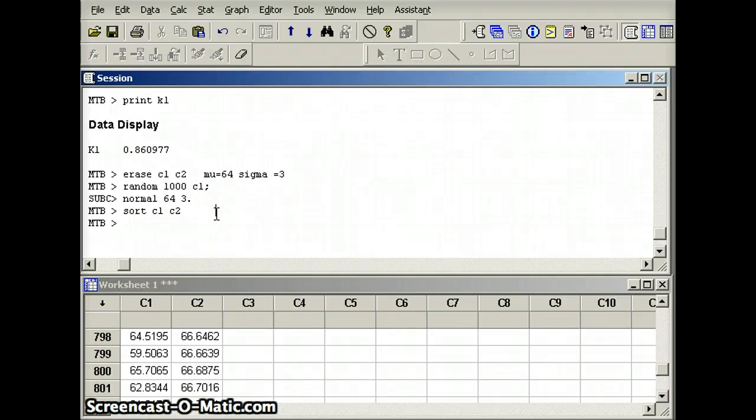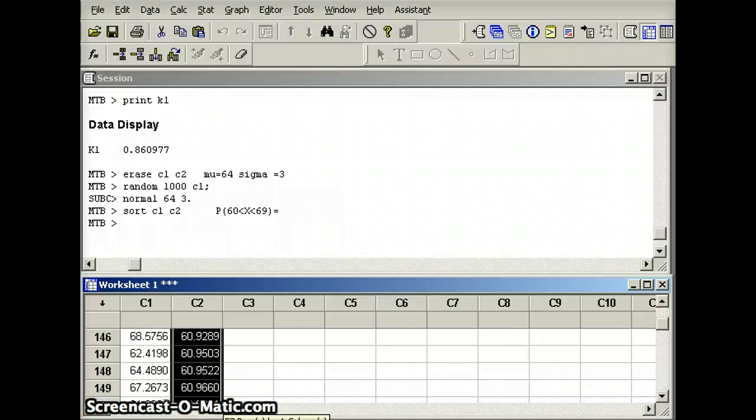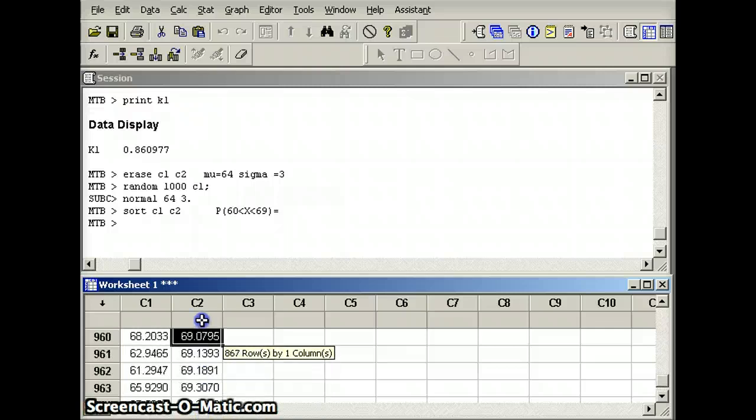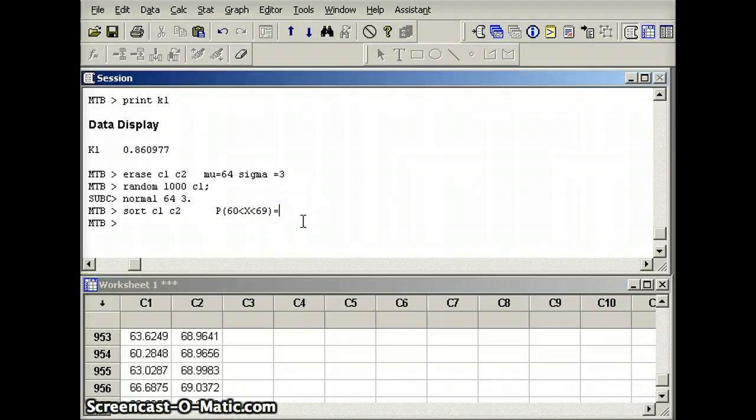And then we're going to see how many of the people are in the range we're looking for. I want the probability that we're more than 60 but less than 69. I scrolled up and I found the first one more than 60. And I'm going to scroll down until I find the last one that's less than 69, which may take a few seconds. And 69 is 862. So 862 out of 1,000 is about 0.862.